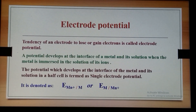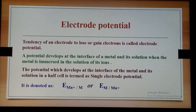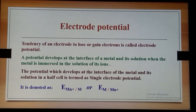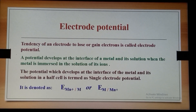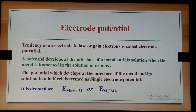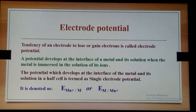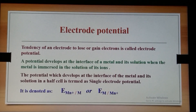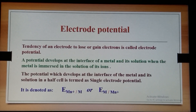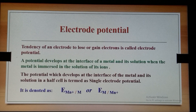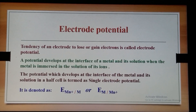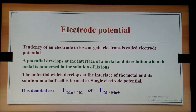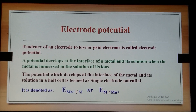When we immerse the electrode in the solution of its ions, it develops a potential at the interface. This electrode potential can be explained as the tendency of an electrode to lose or gain electrons.